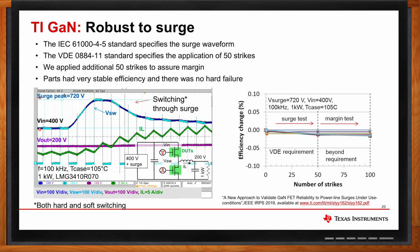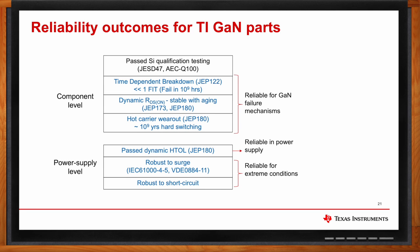How would TI GaN stack up against the list of tests shown earlier? Very well. TI GaN has passed silicon qualification testing for industrial parts — JESD-47 — and for automotive parts it would be AEC-Q100. TI GaN is very robust to time-dependent breakdown, with a FIT rate much less than one. TI GaN has very stable dynamic RDS-on, very good hot carrier wearout reliability — in fact, not something to worry about. At the power supply level, TI GaN passes the dynamic HTAL test of JEP-180, is robust to surge, and is robust to short circuit.